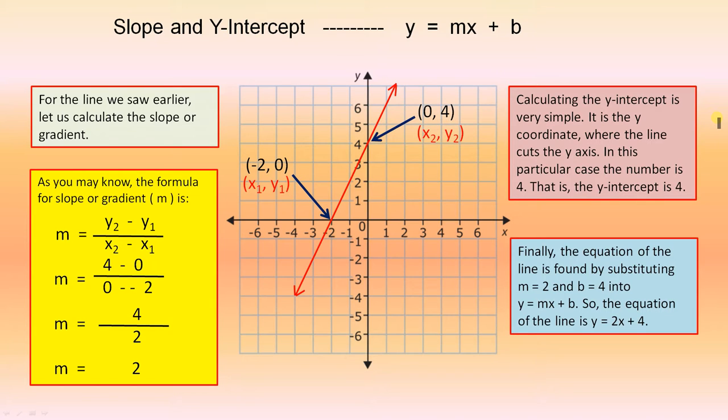Calculating the y-intercept is very simple. It is the y-coordinate where the line cuts the y-axis. In this particular case, the number is four. That is, the y-intercept is four. Now note here, the line goes through the number four. So this is the y-intercept. It's just a number. So when you are asked for the y-intercept, you just give the number. You don't have to give the point.